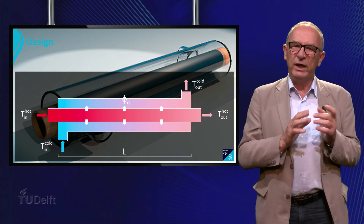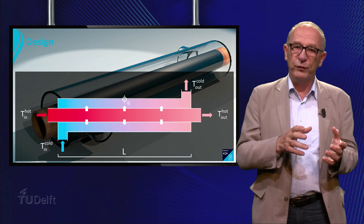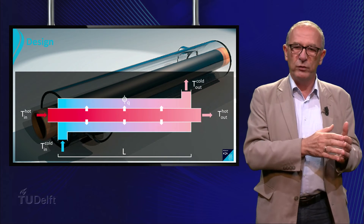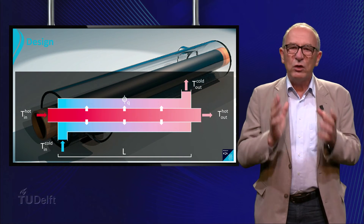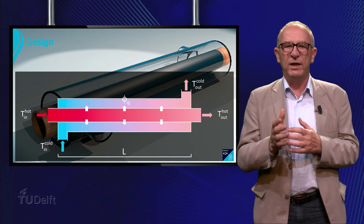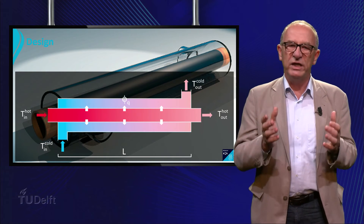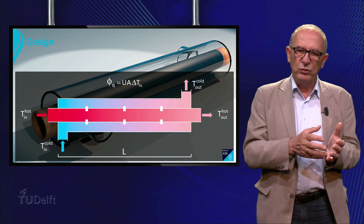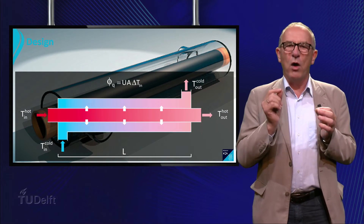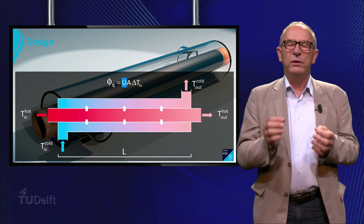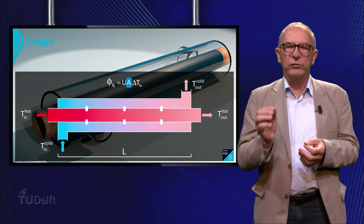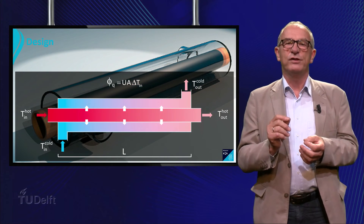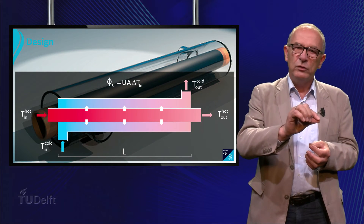In this example, we know the inlet and outlet temperatures of the involved fluids, and as a result we know how much energy is transferred from the hot fluid to the cold fluid. The total heat transfer can be expressed as: the amount of energy phi-Q is the product of the overall heat transfer coefficient U, the surface area A, and the so-called logarithmic mean temperature difference delta TLM.